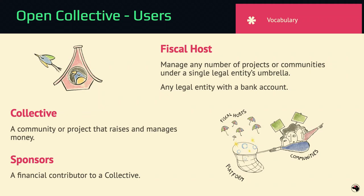If you just go to the website and ask 'what is this thing?' — there's a lot going on. But basically, you can be your own fiscal host using your own bank account and legal entity, or you can make use of one of the fiscal hosts already on Open Collective. Sponsors are anyone who contributes to your collective — in the case of a Drupal Camp, that could be an actual sponsor, an attendee who purchased a ticket, or just a donation.